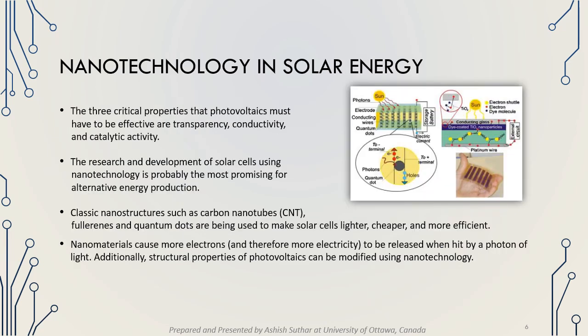Now let's talk deeper about nanotechnology in solar energy. The three critical properties that photovoltaics must have to be effective are transparency, conductivity, and catalytic activity. The research and development of solar cells using nanotechnology is probably the most promising for alternative energy production. Classic nanostructures such as carbon nanotubes, fullerenes, and quantum dots are being used to make solar cells lighter, cheaper, and more efficient. Nanomaterials cause more electrons to be released when hit by a photon of light, and the structural properties of photovoltaics can be modified using nanotechnology.